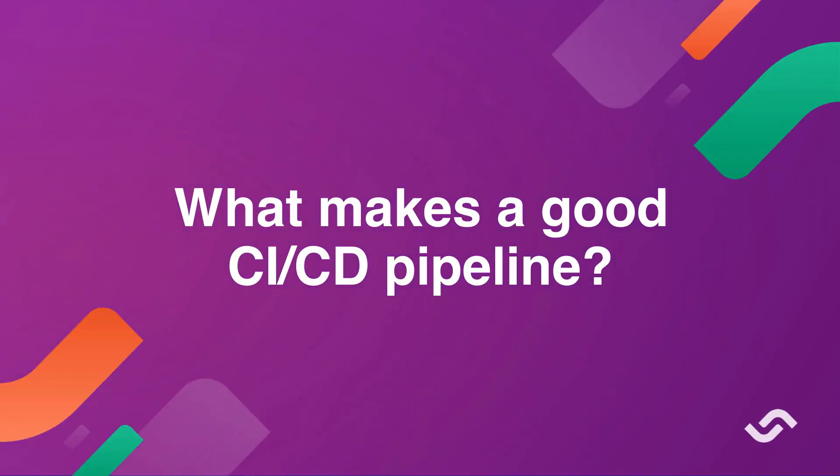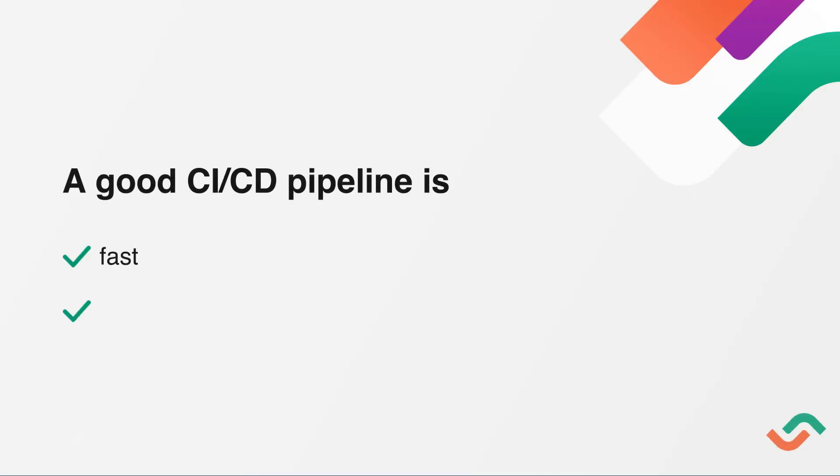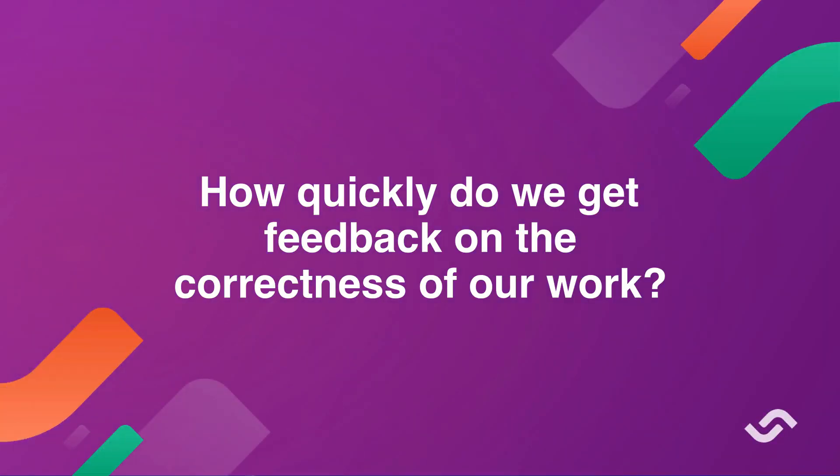Now that we've discussed the benefits of a CI/CD pipeline, let's take a look at what makes a good pipeline. A good CI/CD pipeline is fast, reliable, and accurate. When talking about the speed of the pipeline, there are several important aspects. First, how quickly do we get feedback on the correctness of our work? If it takes longer than the time it takes to get a coffee, pushing code to CI is like asking the developer to join a meeting in the middle of solving a problem — in other words, not efficient.